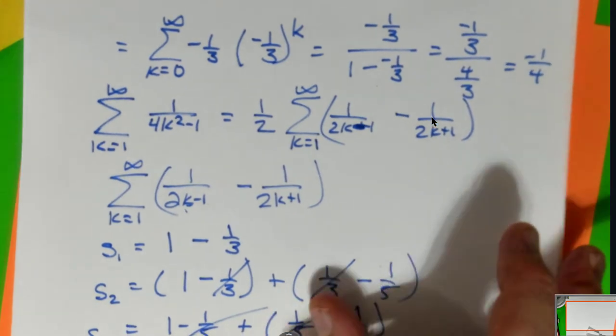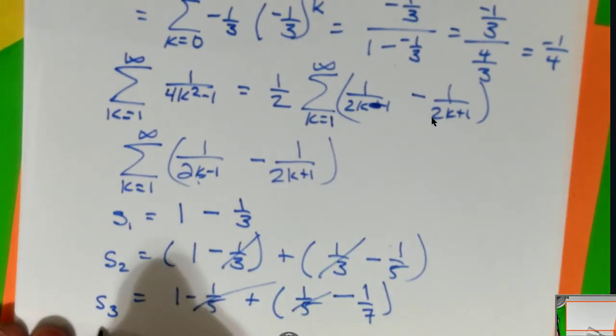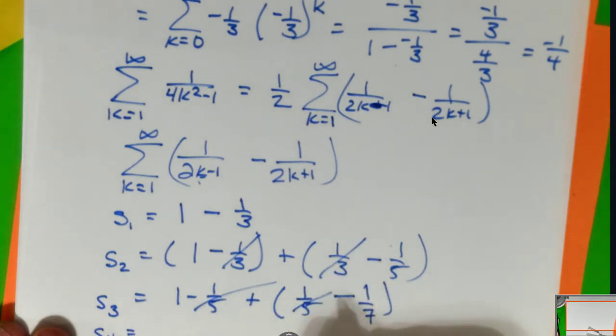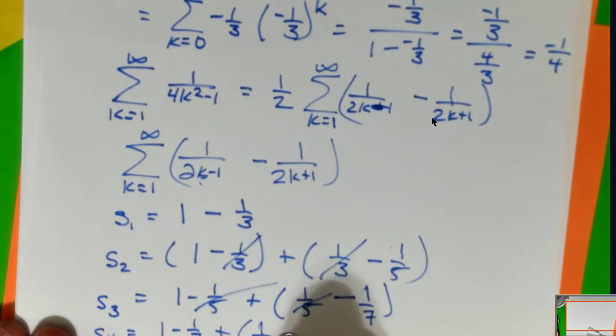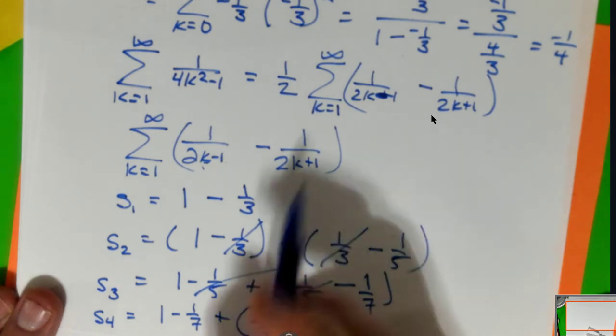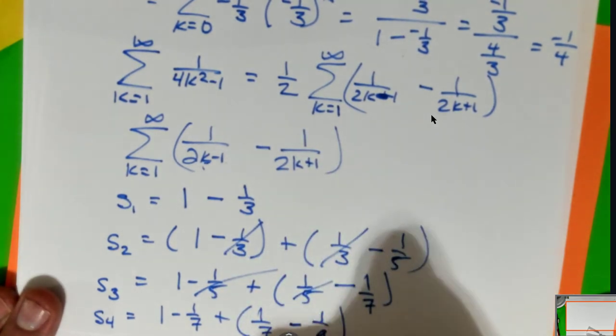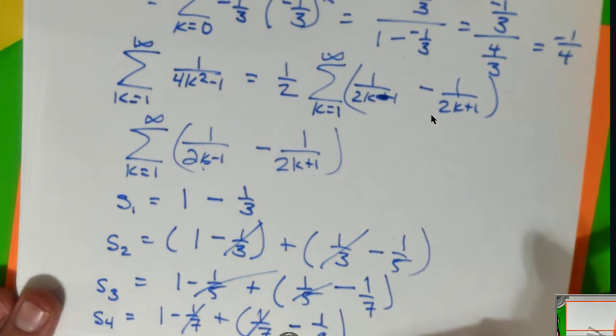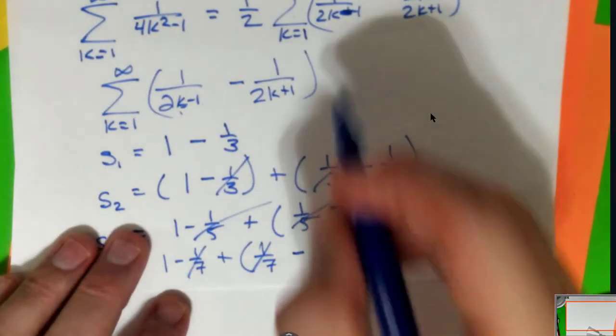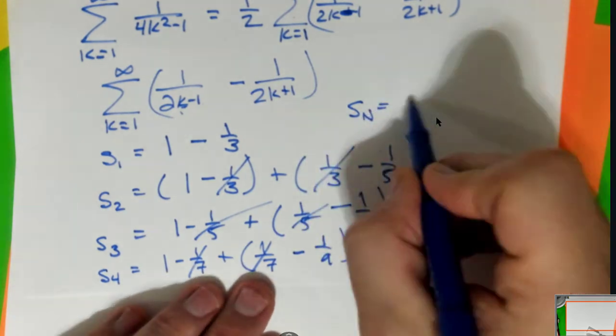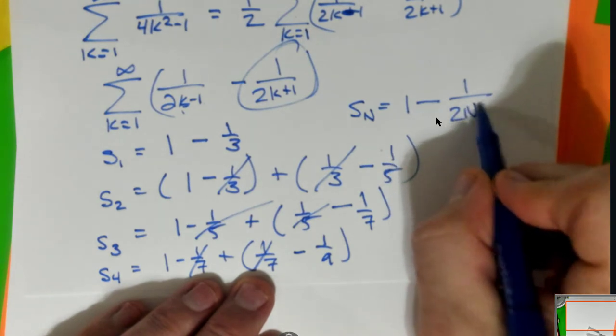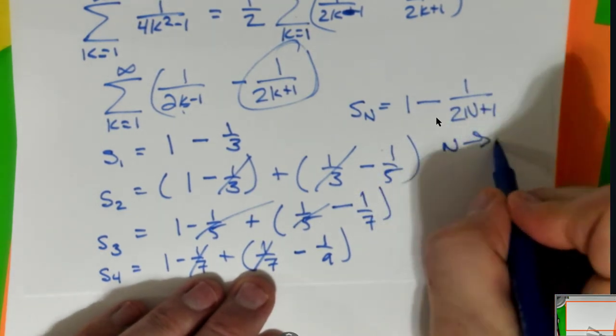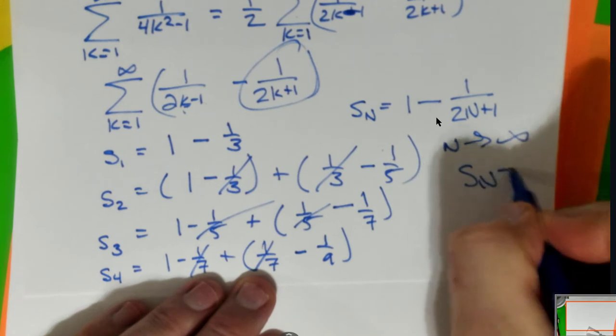I'm beginning to see a pattern in the partial sums. What I think is going to happen is I'm going to end up with one minus a ninth. So my nth partial sums formula is one minus one over two n plus one. As n goes to infinity, S sub n goes to one.